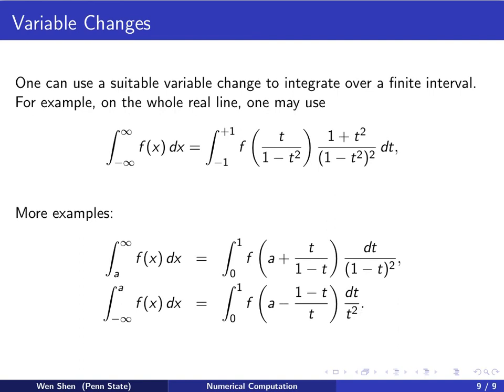One last example will be symmetric to the previous one. Let's say we want to integrate from negative infinity to a number a. And the variable change would be a minus this fraction, (1 - t)/t. Again, you can verify as t ranges from 0 to 1, this x would range from negative infinity to a. And one can come up with various other variable changes that will also do the job. Those choices will very much depend on the problem you have at hand.